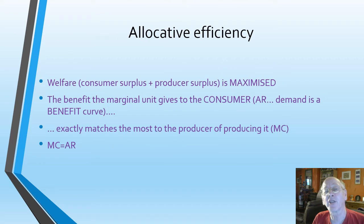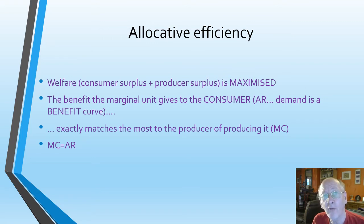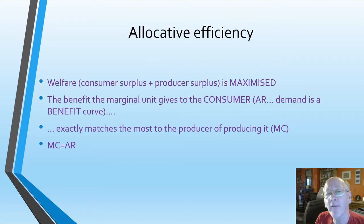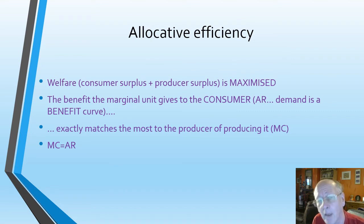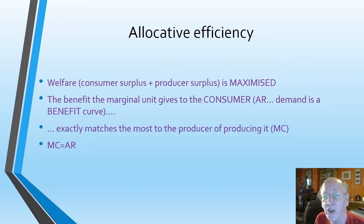What about allocative efficiency? It's another static efficiency. Allocative efficiency is where welfare — defined as consumer surplus plus producer surplus — is maximized. It can also be defined as where the benefit the marginal unit gives to the consumer, shown by the AR curve (the demand curve, which is a benefit curve), is exactly matched by the resources the producer has put into producing it, shown by the MC curve. The easy way to get a mark is by simply saying: allocative efficiency is where MC equals AR.